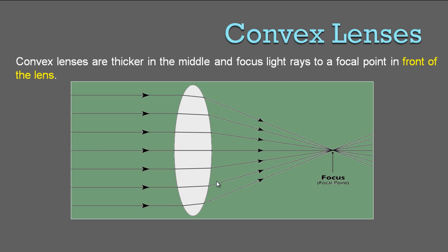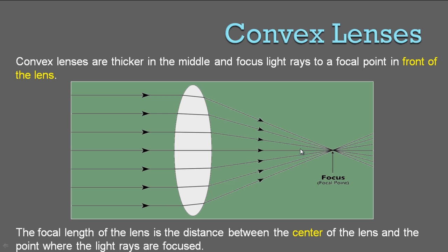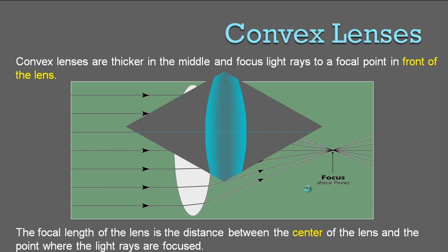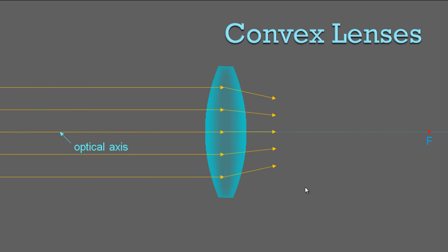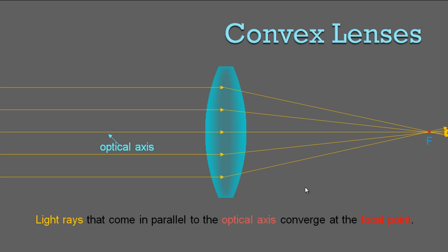Convex lenses are a little different — they're shaped more like eggs rather than hourglasses, and the focal point is in front of the lens rather than behind it. Convex lenses are thicker in the middle and focus light rays to a focal point in front of the lens. The focal length is the distance between the center of the lens and the point where the light rays are focused. Light rays that come in parallel to the optical axis converge at the focal point.